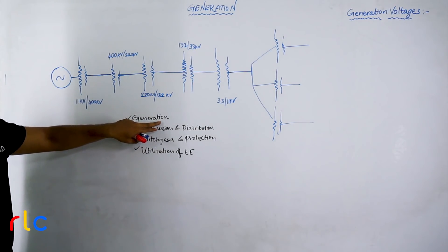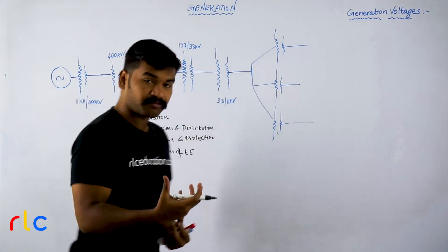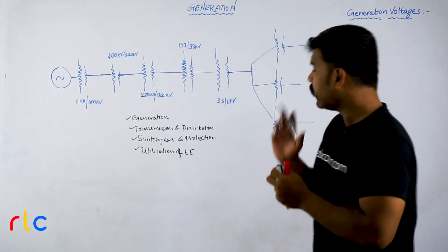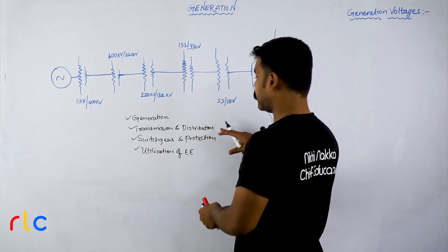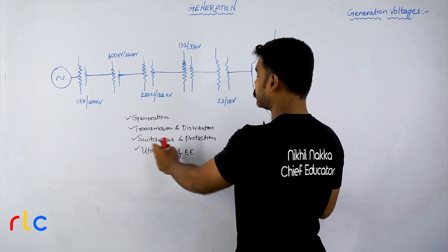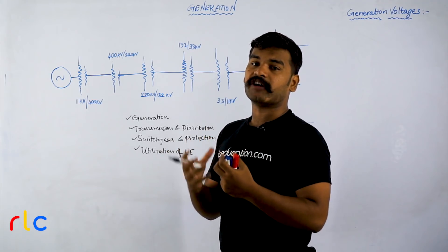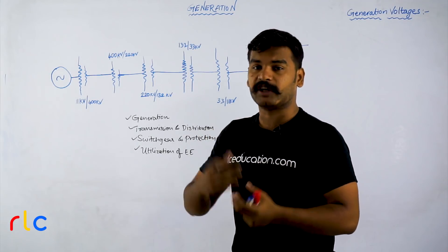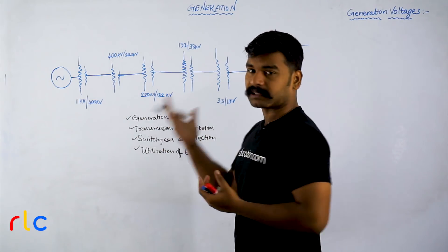Generation is that aspect of power systems that deals with how to create or produce electrical energy. Transmission and distribution is the part that studies the system of conductors or network used to transmit power. Switchgear and protection deals with the study of protective devices — how to protect the power system from getting into faults.